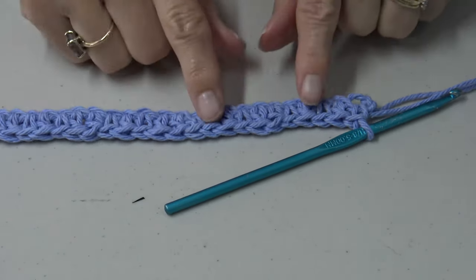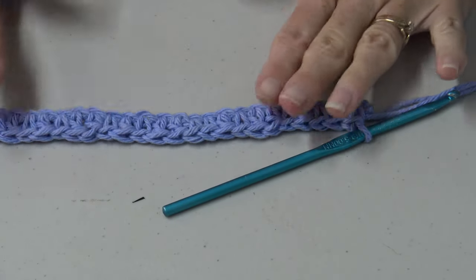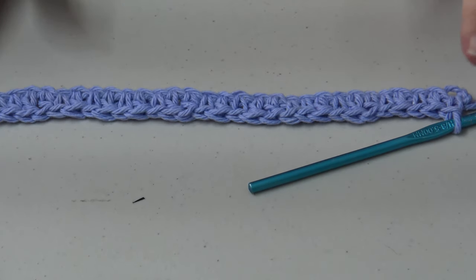So I'm going to continue across in just random order of the combination of the three different stitches. So here's what it looks like at the end of my first row. It is just a random row that gives it a super cool texture.